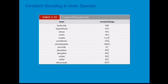Here is the continuation of the common polyatomic ions: hydroxide, hypochlorite, nitrate, nitrite, oxalate, perchlorate, permanganate, peroxide, phosphate, phosphite, sulfate, sulfite, and thiocyanate. Take note that these are the common polyatomic ions used in ionic species, so these are the possible polyatomic ions that will be included in our long test and midterm. Don't forget to familiarize them.